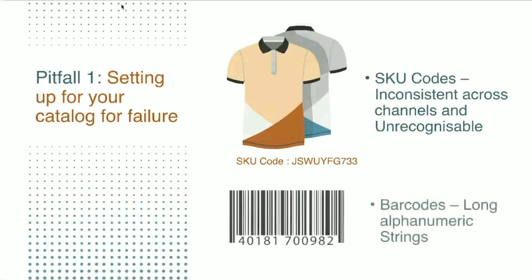Barcodes are different from SKU codes, though they're often mistaken to have the same purpose. Barcodes should be machine-readable for quick scanning — they should be numeric, avoid too many alphanumeric characters, and be kept short. They just need to be unique across your SKUs. That's the key difference between barcodes and SKU codes.